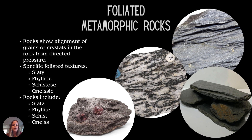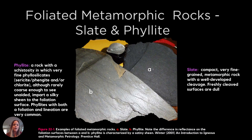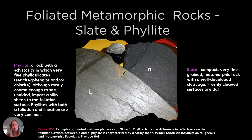With our foliated metamorphic rocks, we've got slate, phyllite, gneiss, and schist. These all have arranged crystals or grains from applied directed pressure, so you can also figure out which direction the pressure was applied at the time of formation. Slate and phyllite are often confused because they're both from compacted grains — one is just more metamorphosed than the other. The big difference when identifying is that slate is going to be dull and phyllite is going to have a sheen to it. Technically, phyllite also has a slightly wavy texture, but it is often such a fine grain that it's hard to see.